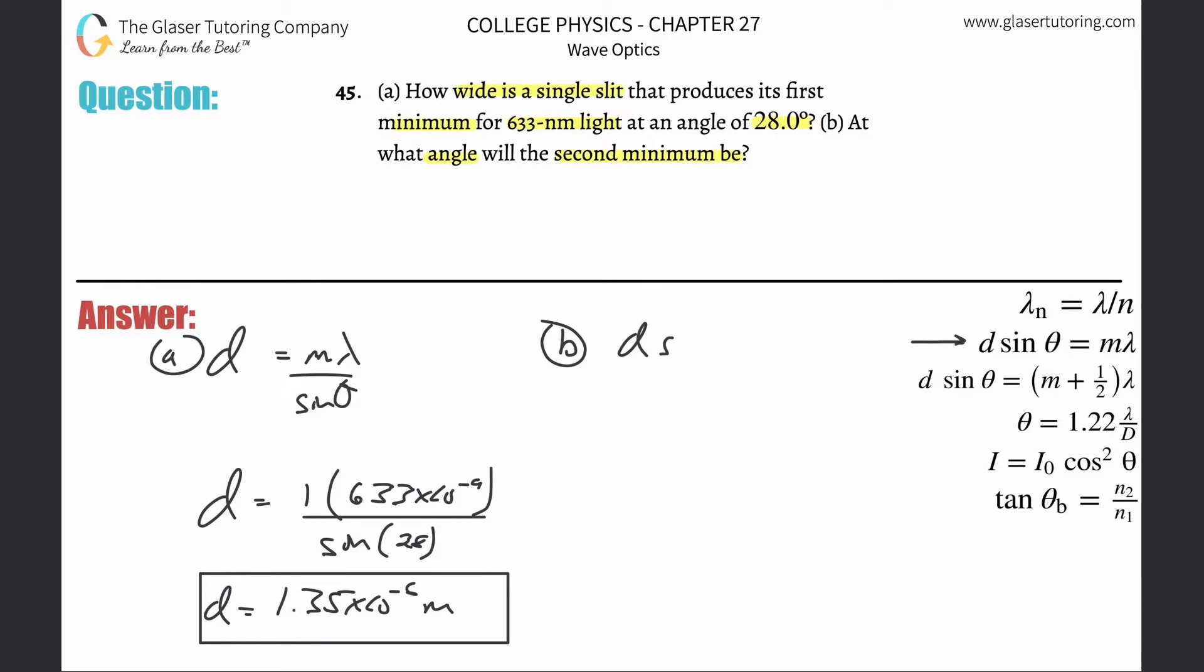Go back to the original formula, D sine theta is equal to M lambda. They want now to know the angle. So divide D out from both sides. So you just simply do a little switcheroo. And all we're going to do is take the inverse sine of both sides. And what that's going to allow you to do is cancel the sine on the left, and there is your formula.